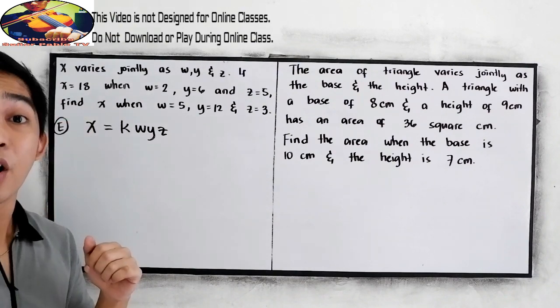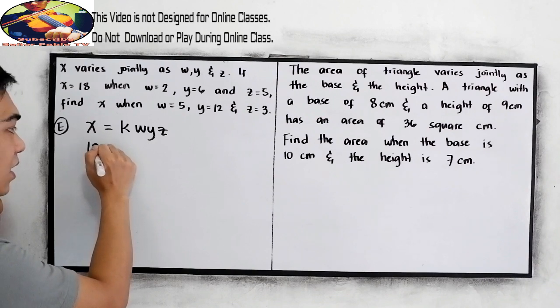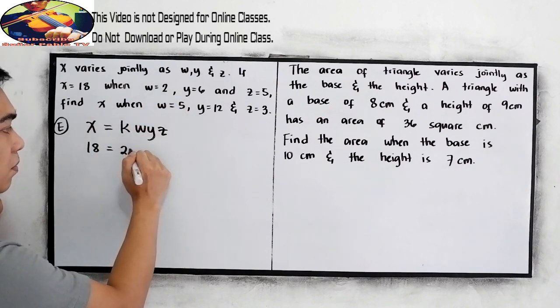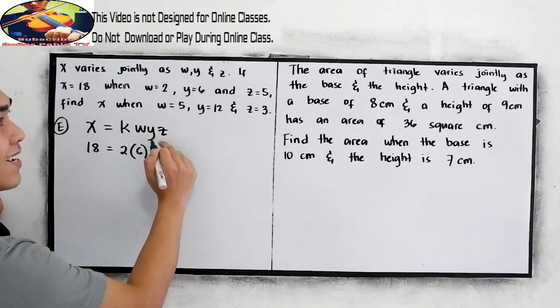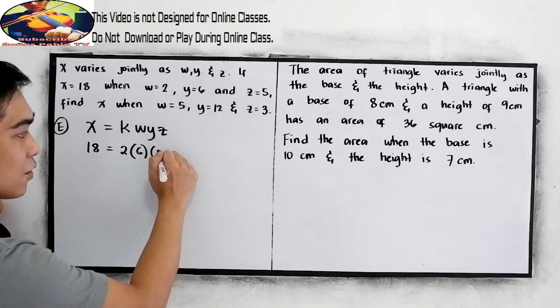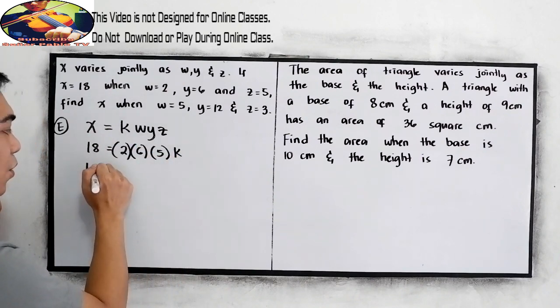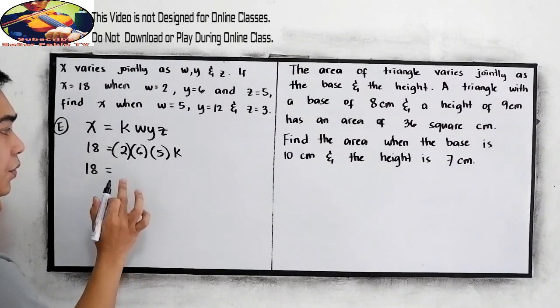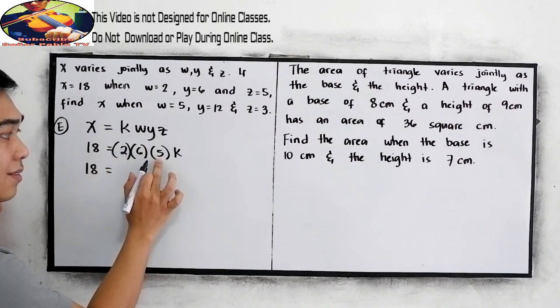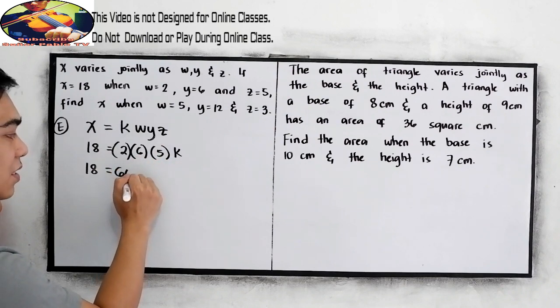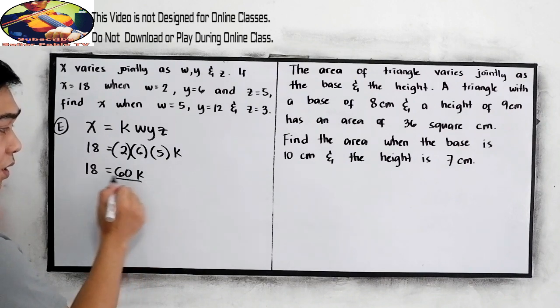If x is 18, after finding the equation, find the constant of variation. So x is 18, w is 2, y is 6, z is 5, then k. Now 18 equals 2 times 5, that is 10 times 6. So we have 60k. To find k, we need to divide by 60.